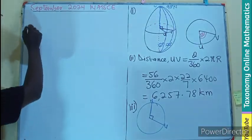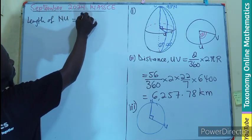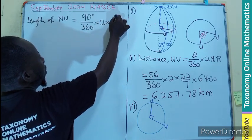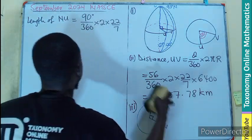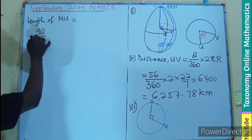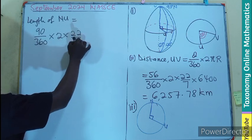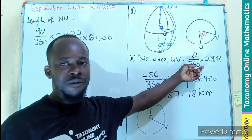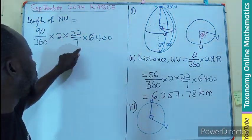So that is going to be length of NU will become 90 degrees divided by 360 times 2 times 22 over 7 multiplied by... Let's write this one down. So let this become 90 over 360 times 2, 22 over 7 times 6,400. Don't forget the formula is here, so we are not quoting the formula again. Theta over 360 times 2 pi R, the circumference of the circle.